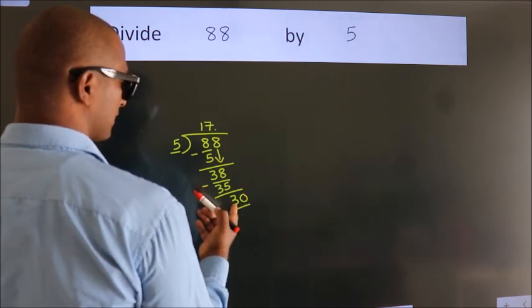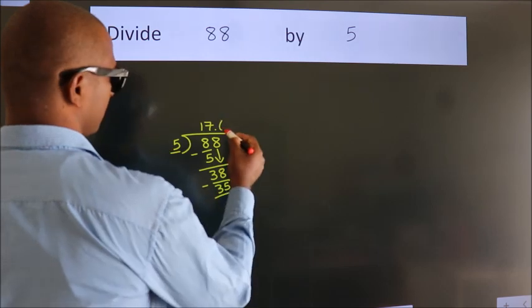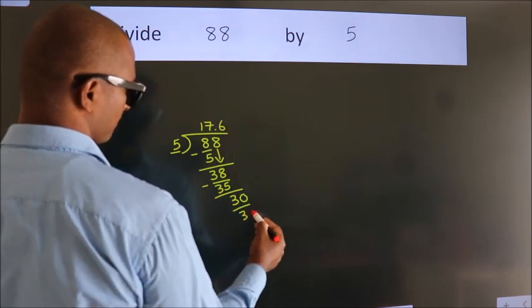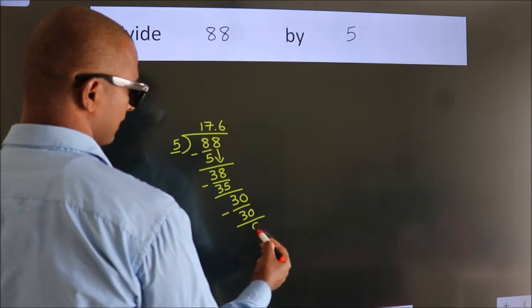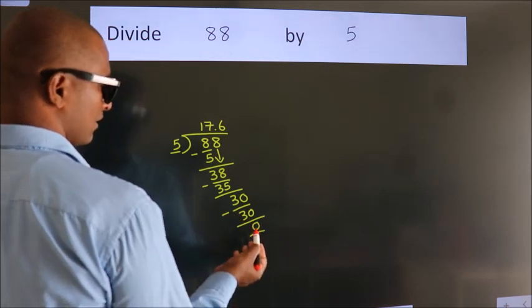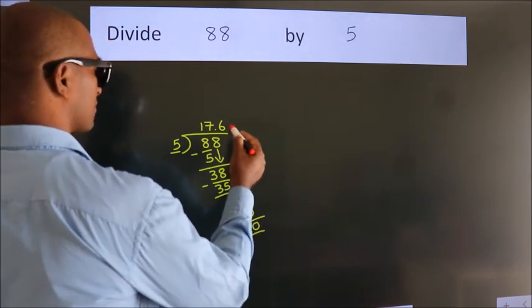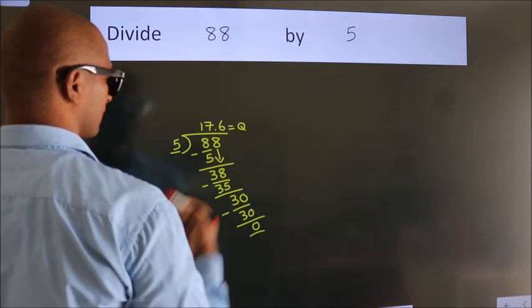When do we get 30 in the 5 table? 5 times 6 is 30. Now we subtract and get 0. We got remainder 0, so this is our quotient: 17.6.